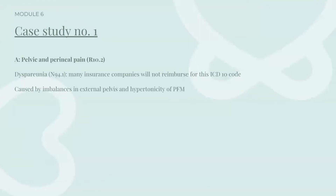For assessment, we diagnose her with pelvic and perineal pain, which is R10.2, and dyspareunia N94.1. Many insurance companies will not reimburse for this ICD-10 code, so we generally do pelvic and perineal pain along with M62.838 for muscle spasm. We could have a whole other course on why insurance companies won't, a lot of times, accept dyspareunia.